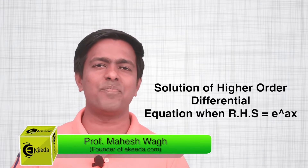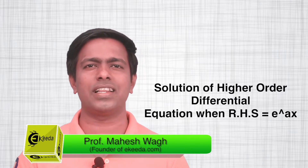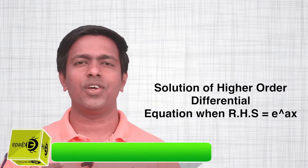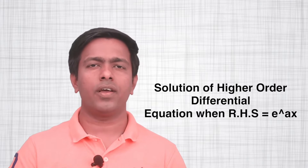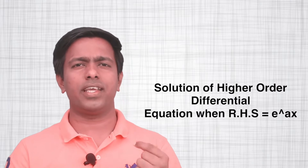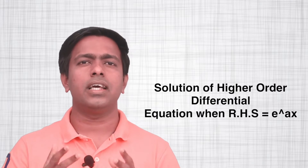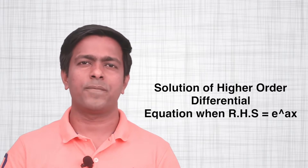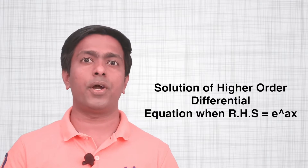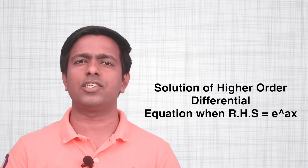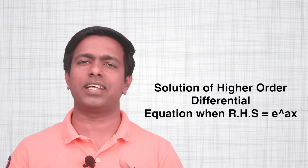Hello students. After completing the first part where we saw how to solve the higher order differential equation when the right hand side is equal to zero, let's move to the next topic where we'll see how to solve the equation when the right hand side is e to the power ax — the exponential term. There is a particular method to solve it, and we'll understand how to apply this method in a numerical.